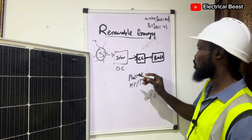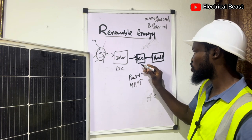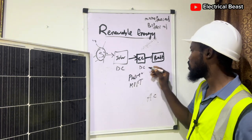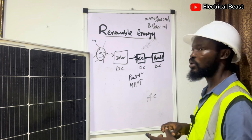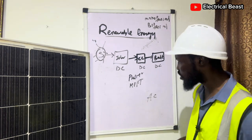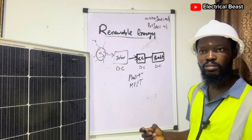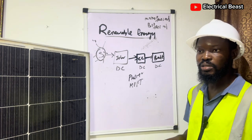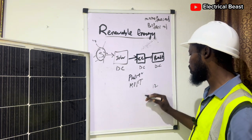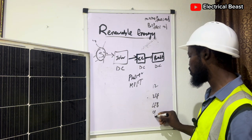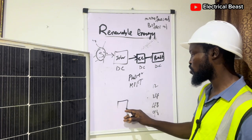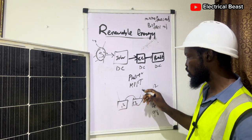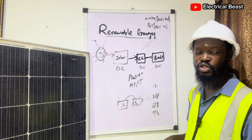We are still on the DC stage — the energy that goes into the charge controller is DC. From the charge controller we have the battery, which stores the energy produced in DC. We have different kinds of batteries: we have lead acid battery and lithium battery. For lead acid we have AGM, flooded or tubular batteries, and dry cell. These batteries are rated in volts — 12V, 24V, 48V, even 96V. You can connect two 12V batteries in series to get 24V.